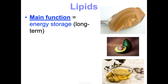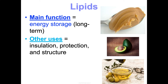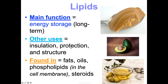Next are lipids. Their main function is also energy storage, but think more long-term — not as easy to access. They also do a lot of other things like insulation, protection, and structure. When you think about what you're eating, think fats and oils in terms of lipids — like peanut butter and avocados. Phospholipids are a very special lipid that make up the cell membrane, which is kind of like the skin that surrounds the cell. Steroids are also lipids.